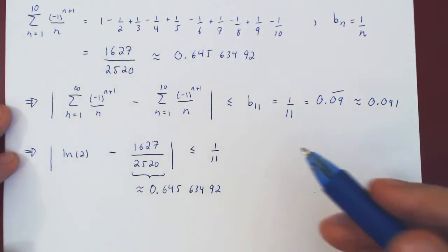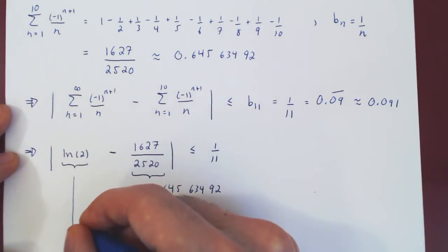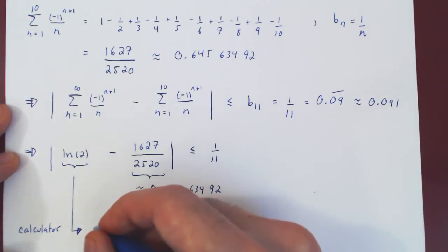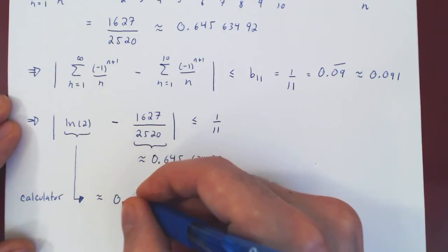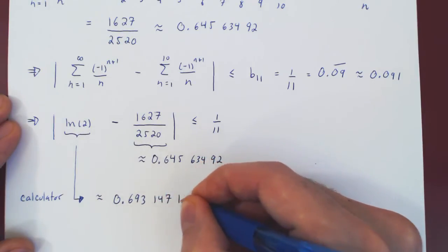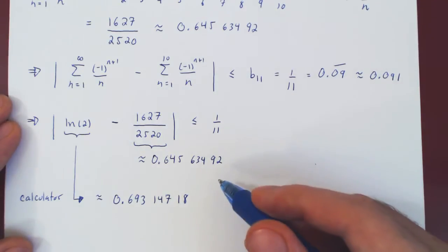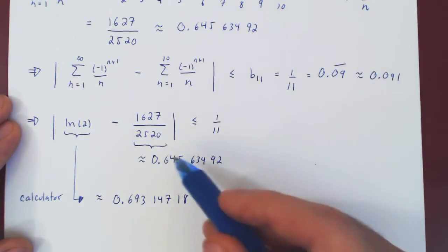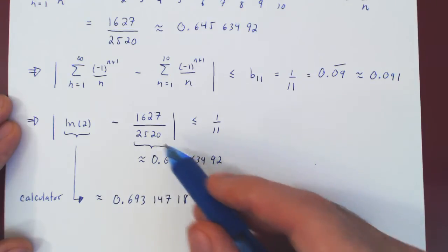Well, now take out your calculator and punch in ln of 2. And you should obtain from the calculator roughly 0.69314718. And so you can see, this looks pretty good. We're seeing the error is no bigger than roughly 0.1 if you round up here. And indeed, our first decimal place is correct, and we're off in the second decimal place. But we've only added 10 terms of the series.